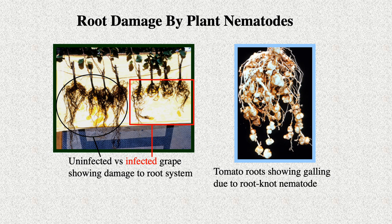Plant nematodes can cause various kinds of damage, but the most common type is damage to the roots of plants. On the left photo you can see the difference in root size between uninfected versus infected grape plants. On the right is the damage caused by the aptly named root-knot nematode. Root damage reduces transport of water and nutrients to the plant, and this reduces yields in cultivated crops.